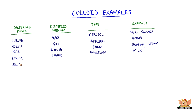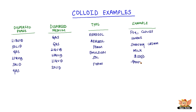Solid in liquid is called sol. Blood is an example of sol. Gas in solid is called foam, and sponge and rubber are examples of foam.